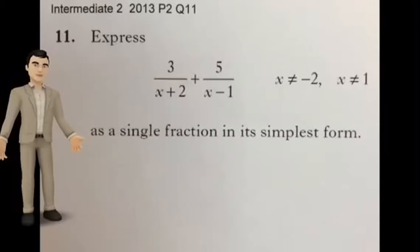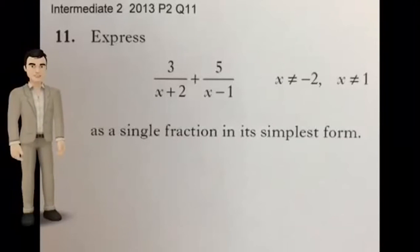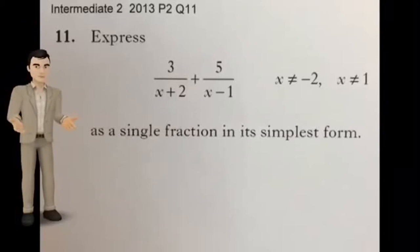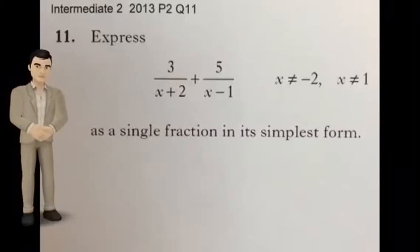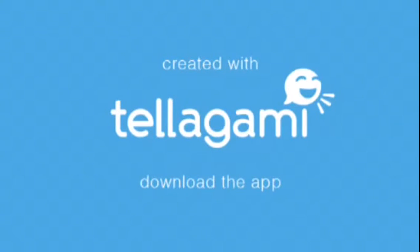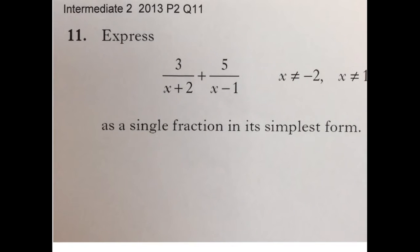Express 3 over (x plus 2) plus 5 over (x minus 1) as a single fraction in its simplest form, where x is not equal to negative 2 and x is not equal to 1.